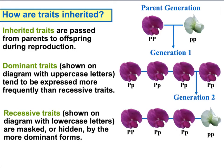So in this case, capital P's represent purple and lowercase p's represent white. Each generation passes along one letter, showing how dominant and recessive traits carry through. Knowing this information can help humans determine the shape of their earlobes, what their hairline will look like, or what their thumbs may be like — hitchhiker thumbs, for example. Dominant traits tend to be expressed more frequently than recessive traits, because recessive traits are masked or dominated by the dominant traits.